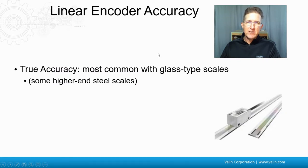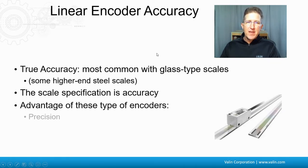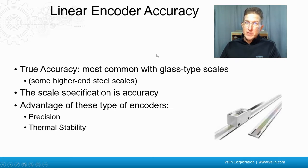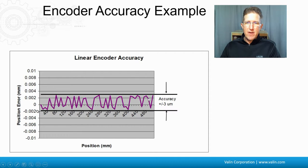Glass scale types have a true accuracy, and the scale specification is actually called accuracy. The advantages of these types of encoders is the precision and the thermal stability. They might be a little more expensive, but they are more precise. There is no linear increase of the accuracy over the half meter, and the accuracy is specified at only plus or minus three microns for this one.